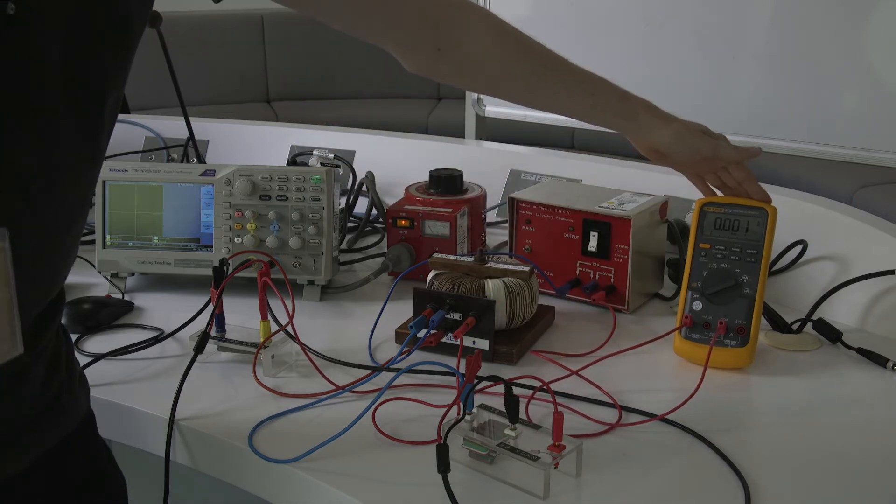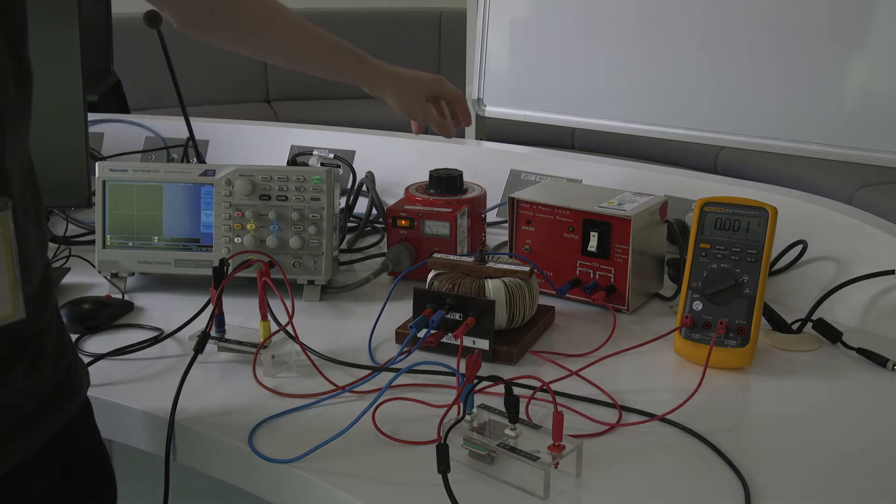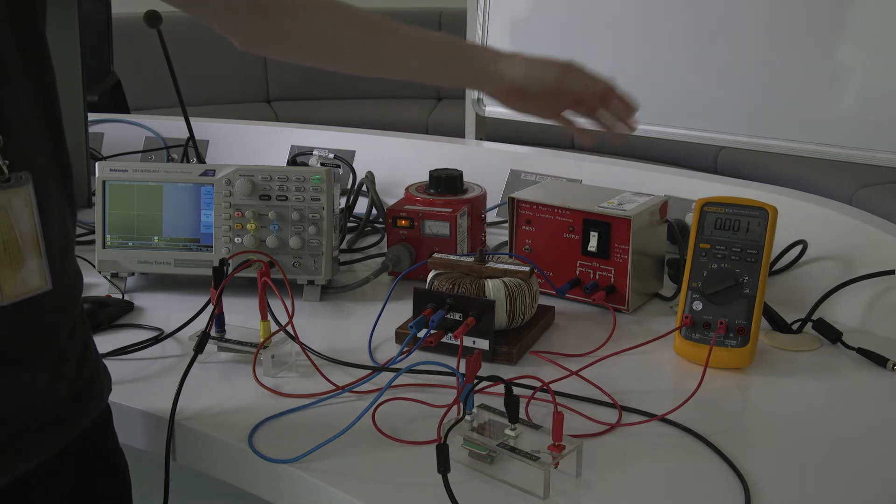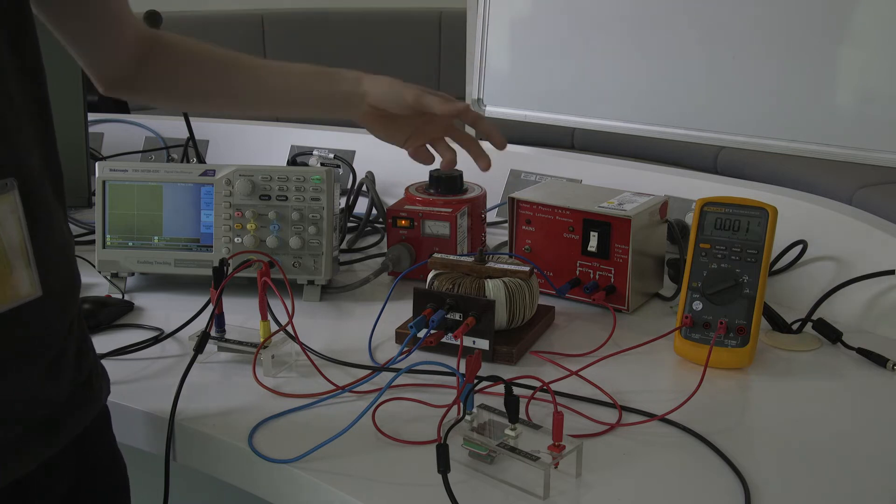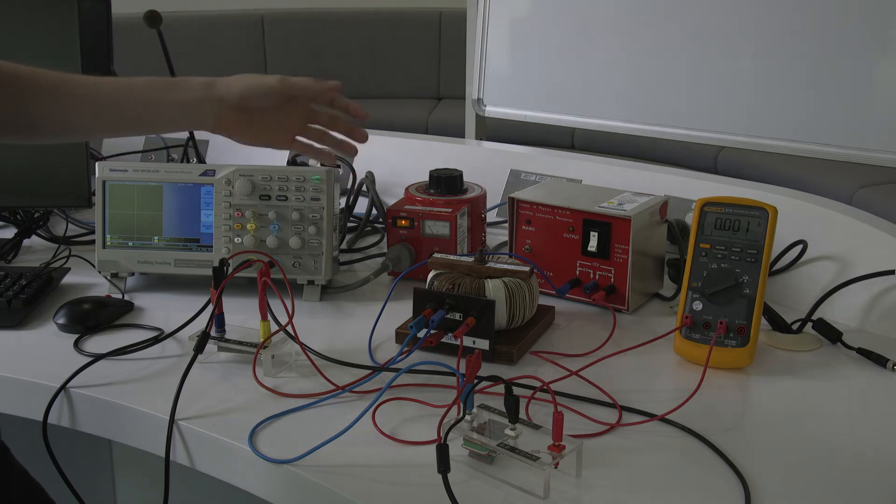This multimeter is measuring the current across a resistor. By varying this voltage regulator, that will vary the output of the power supply and change the current flowing through the primary coil. You can use the current in the primary coil to work out the magnetic field that's induced by that coil, and that's the magnetic field that the core is going to experience.